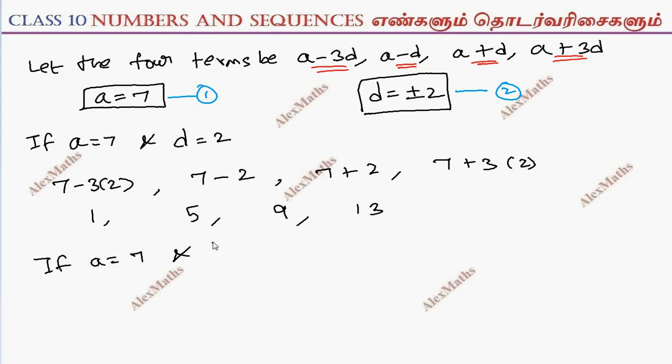If d equals minus 2: first term is 7 minus 3 times minus 2, which is 13. Second term is 7 minus minus 2, which is 9. Third term is 5. Fourth term is 7 plus 3 times minus 2, which is 1.